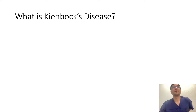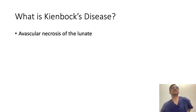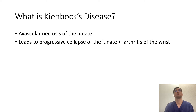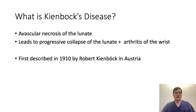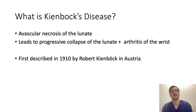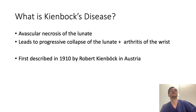So what is Kienböck's disease? Kienböck's disease is essentially a disease of avascular necrosis of the lunate. This leads to a progressive collapse of the lunate and then displacement of the other carpal bones and progressive arthritis in the wrist. It was first described back in 1910 by Dr. Robert Kienböck in Austria. He was a radiologist who first described it as osteomalacia of the lunate. However, as our understanding progressed, we understood that it was avascular necrosis.